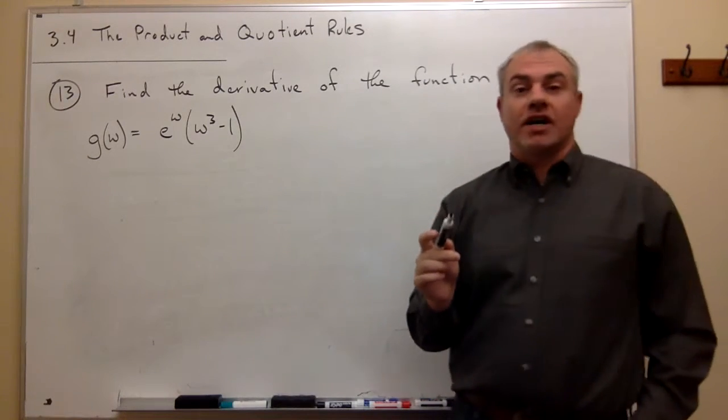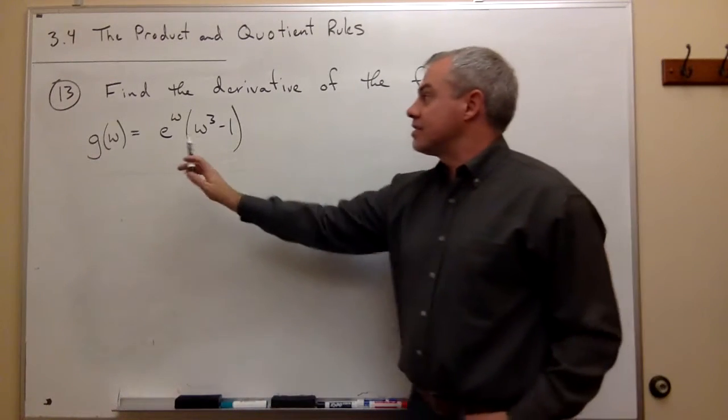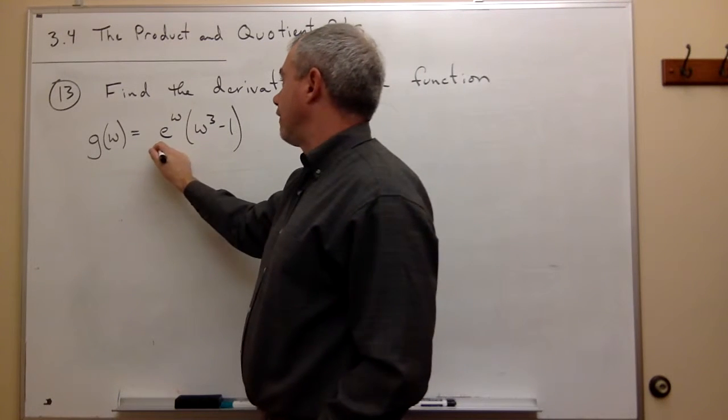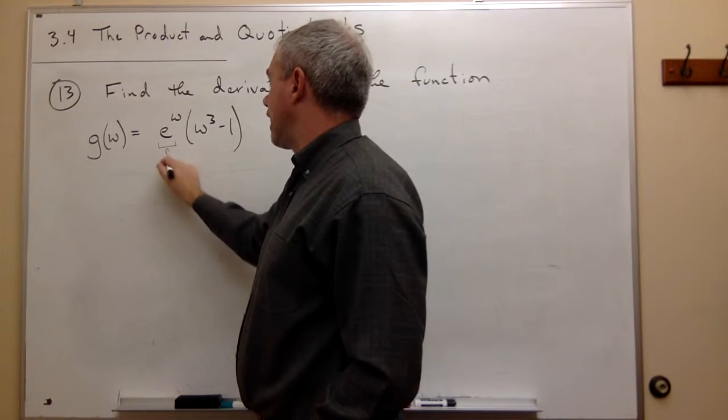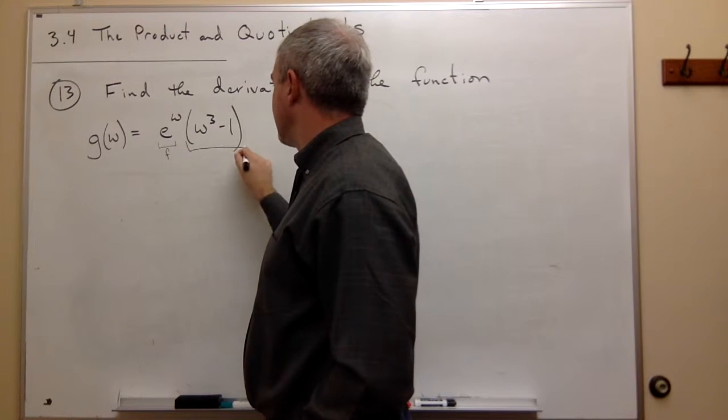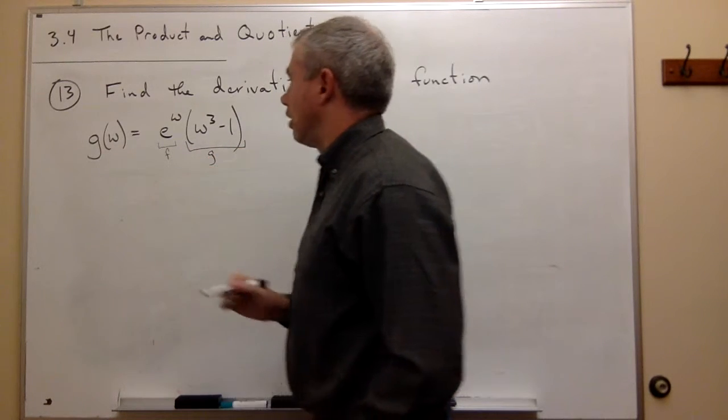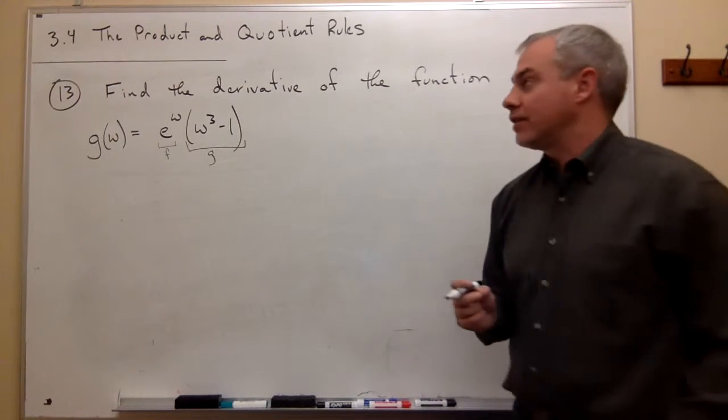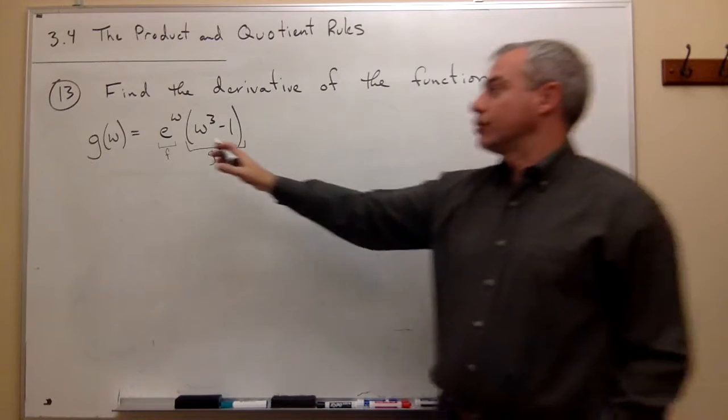Let's review one more time. This is the product of two functions. I have a function here, let's call it f. I have another function here, let's call it g. Each of those functions individually I know how to take the derivative of, so I need to use the product rule.